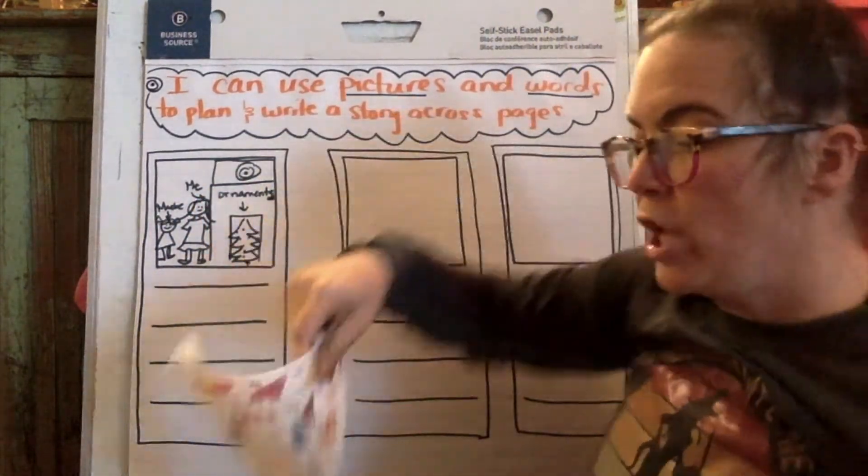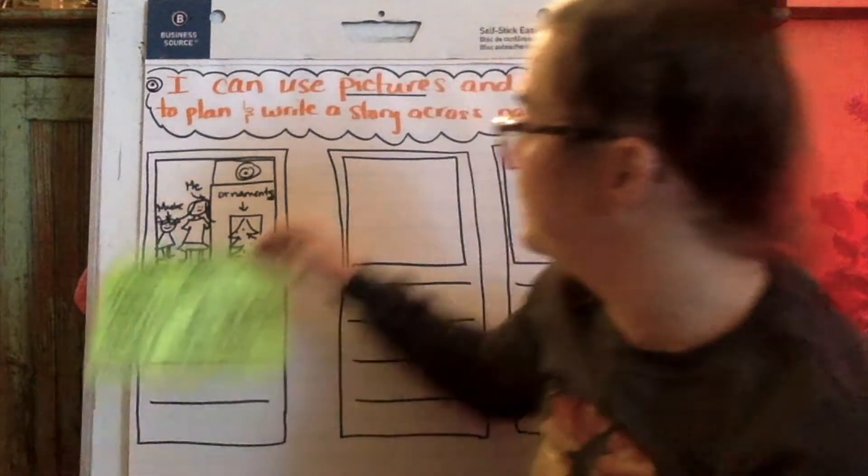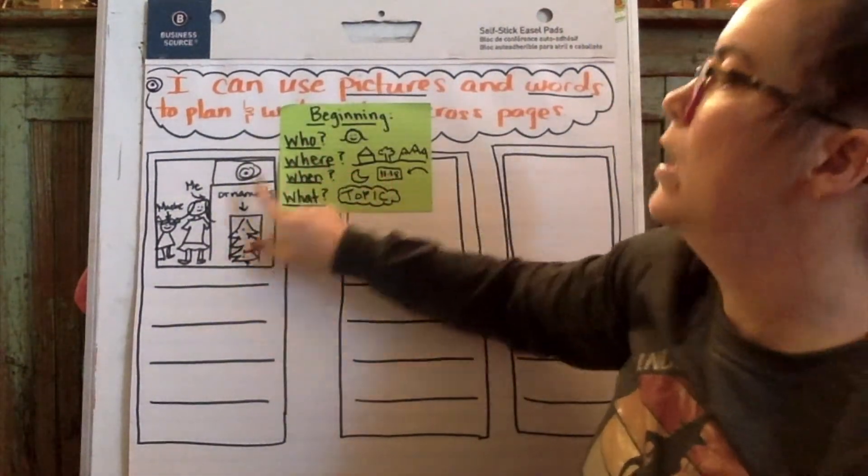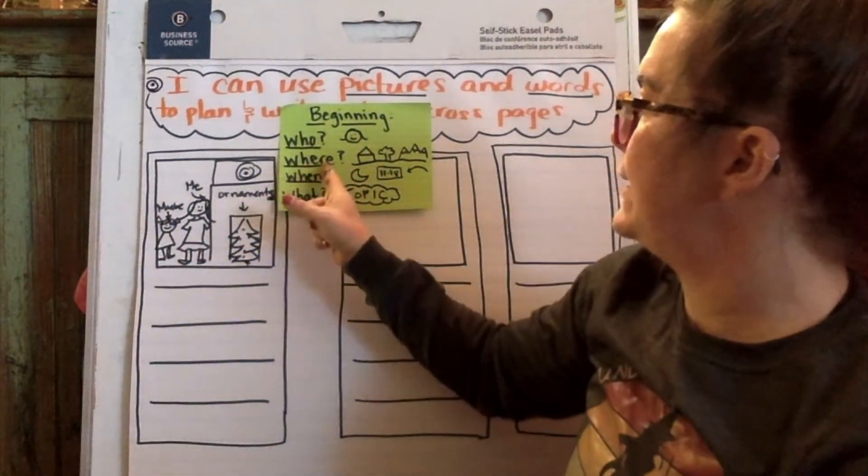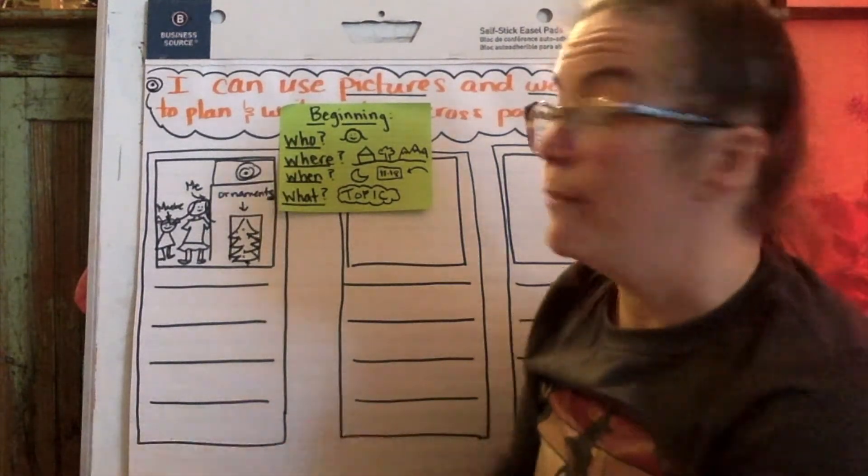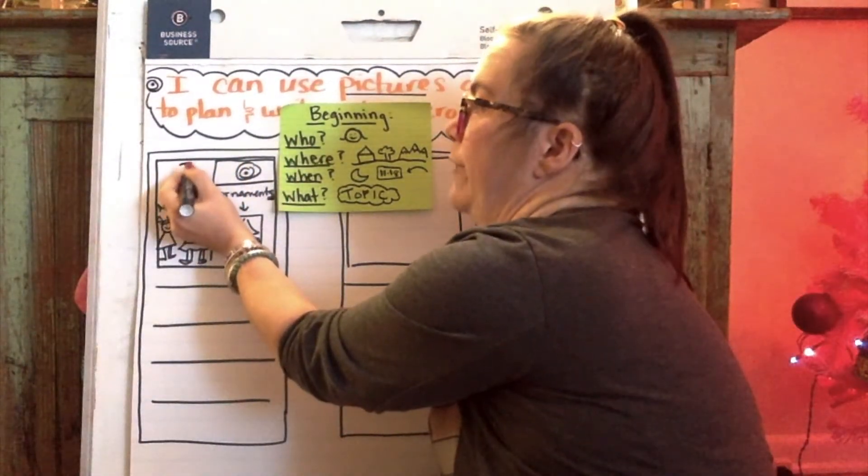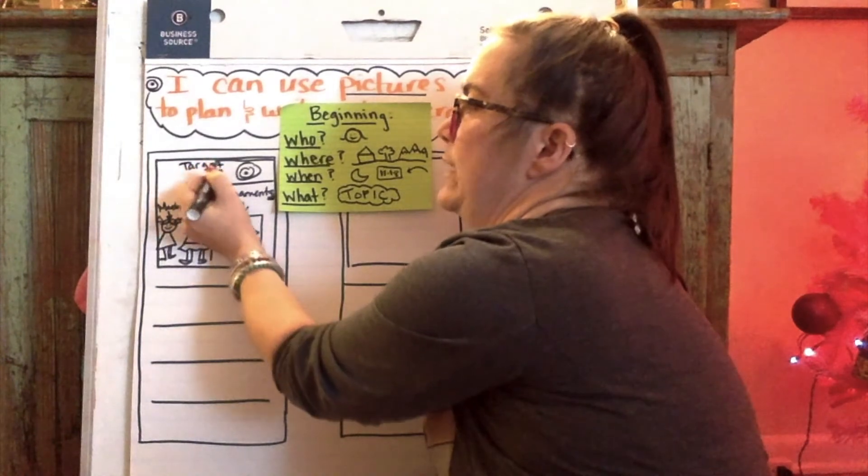Ornaments. Okay, so the beginning of my story - does it tell who? Yep, me and Mabey. Does it tell where? Yep, we went to the store. I could even be more specific and I could write Target if I wanted to, but the symbol tells that too.